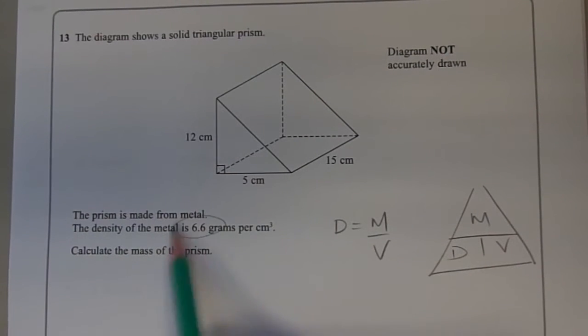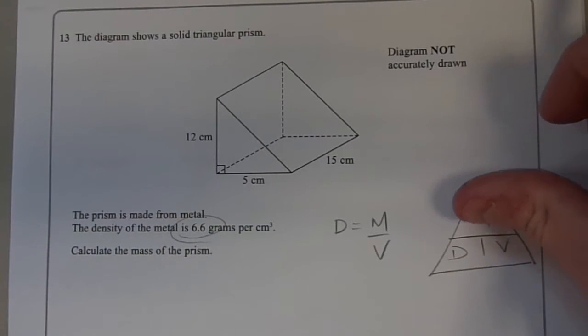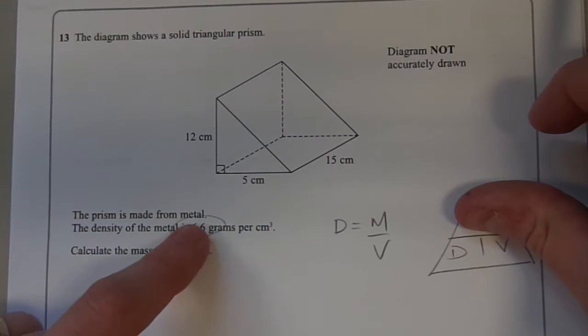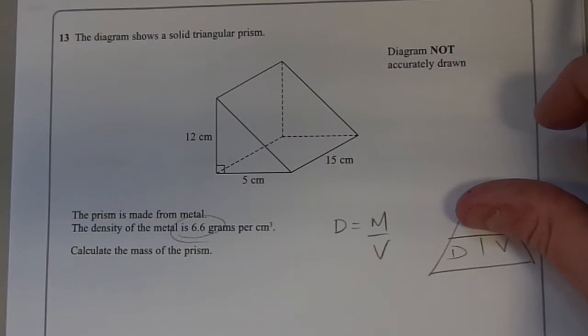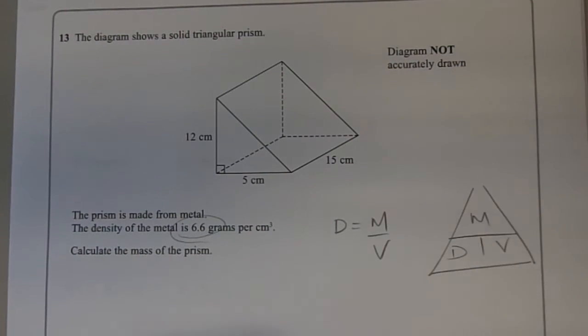We are told the density and asked to calculate the mass. In order to work out the mass we need to multiply the density by the volume, so we need to calculate the volume as well. And we can do that from the information given.